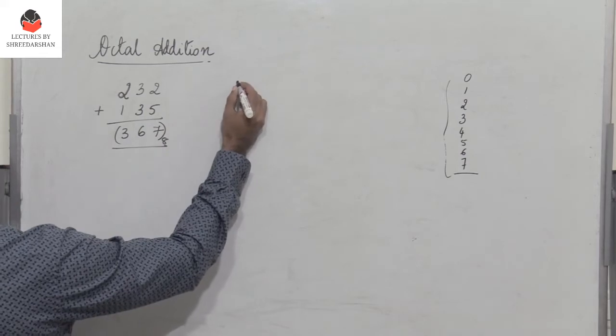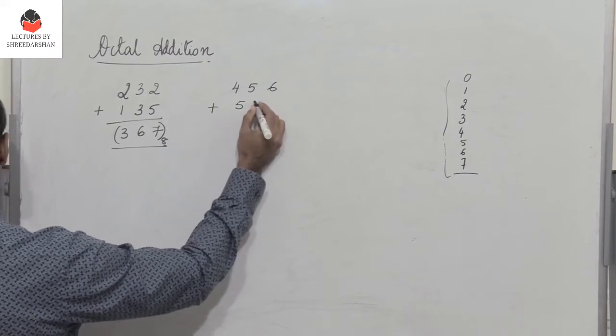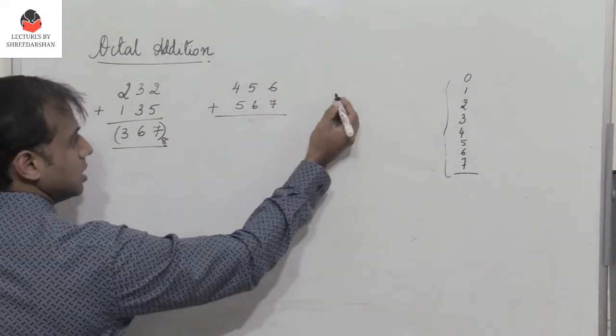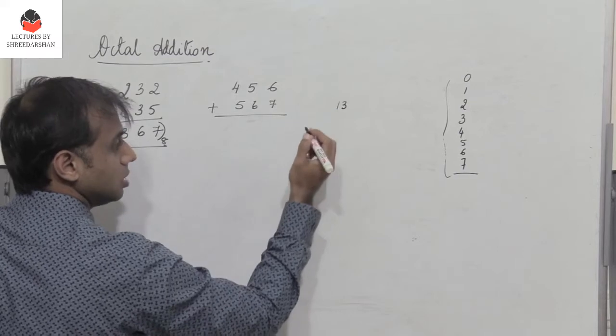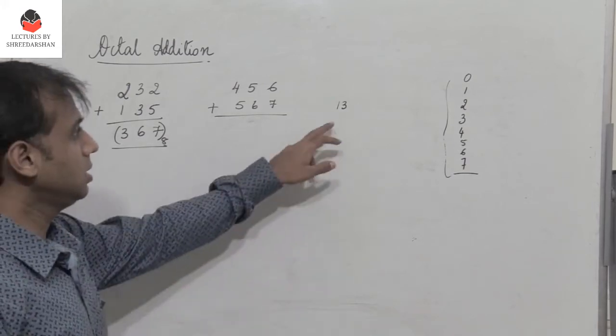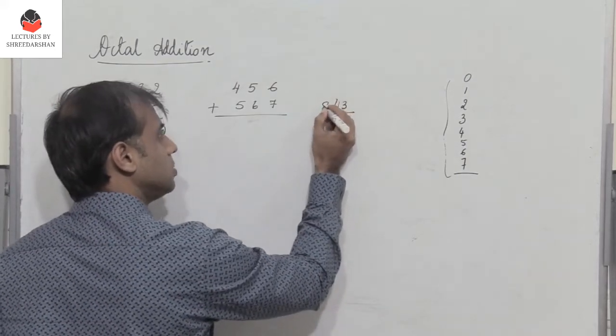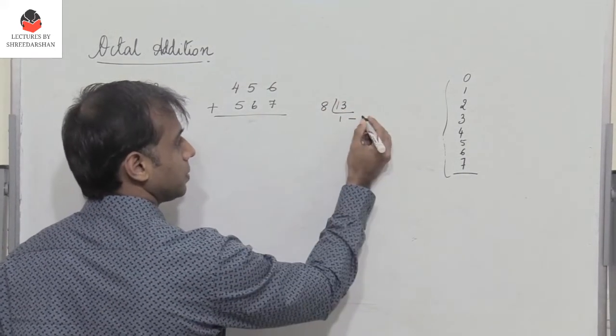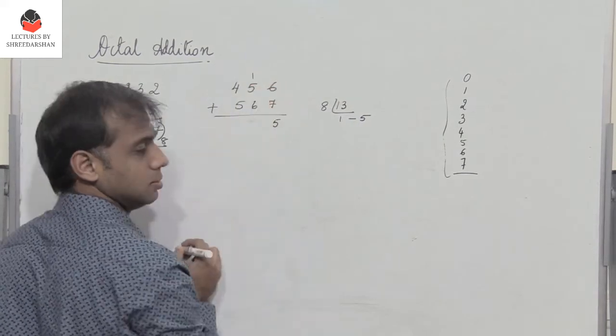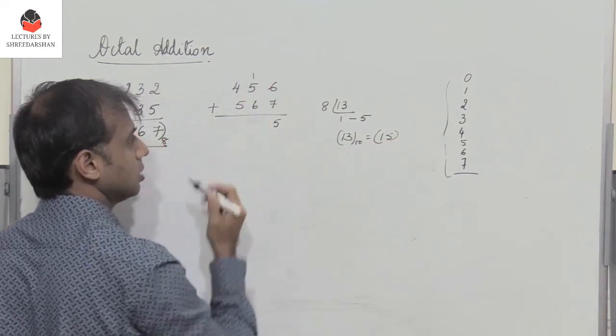Let's take another example. I have 4 5 6 plus 5 6 7. Now 6 plus 7 is 13. This number 13 is greater than 7. When the number is greater than 7, we have to convert this to octal format because this is a decimal number. I divide by 8: I get 1 as the quotient and 5 as the remainder. Therefore 13 in decimal is 1 5. I write 5 and take the carry.